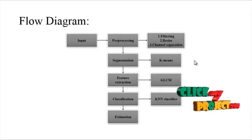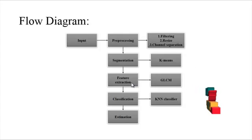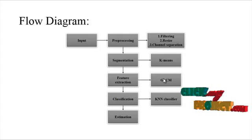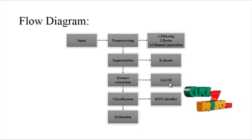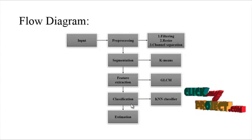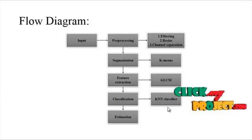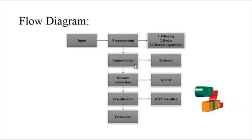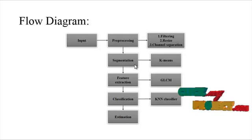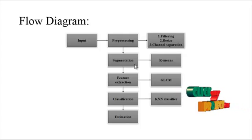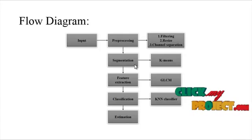After pre-processing, segmentation is applied using k-means clustering. Then feature extraction is performed using GLCM — the Gray Level Co-occurrence Matrix. Finally, classification is applied using the k-means classifier. In the segmentation process, the k-means algorithm is used to segment the particular fruit image.